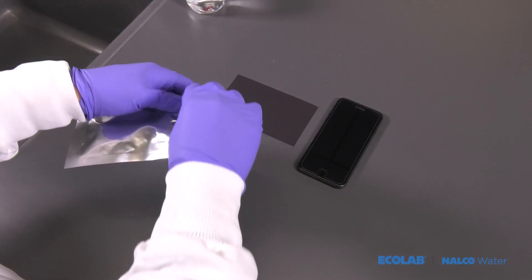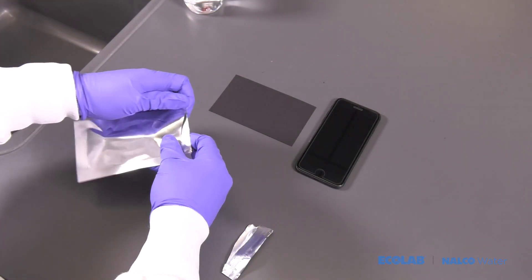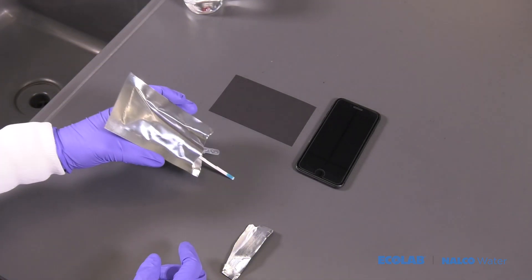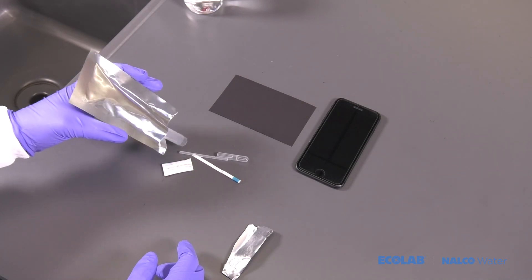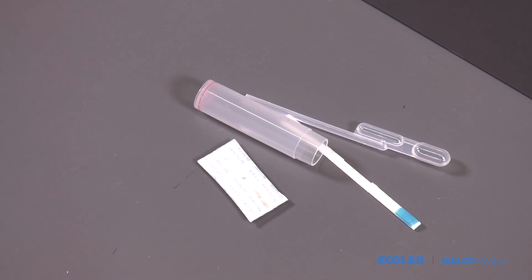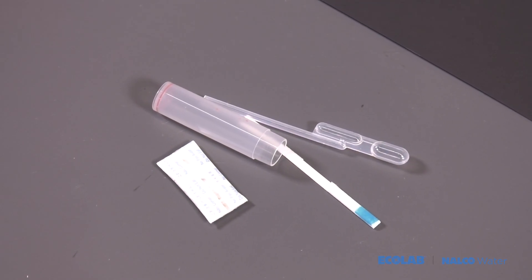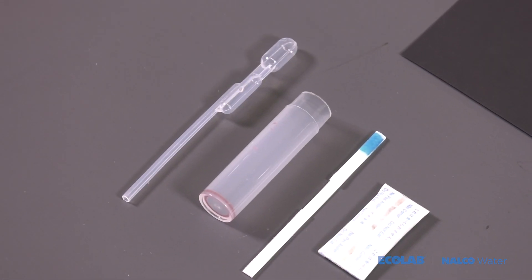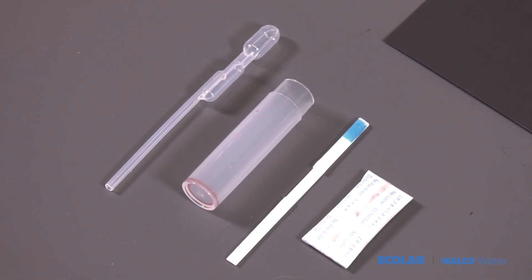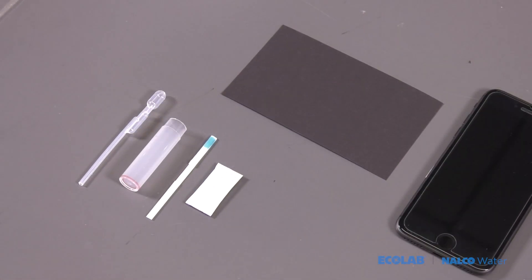Open the foil pouch and remove the contents. Verify all test kit items are available which includes volumetric pipette, one test vial, one test strip, one desiccant, one backdrop.